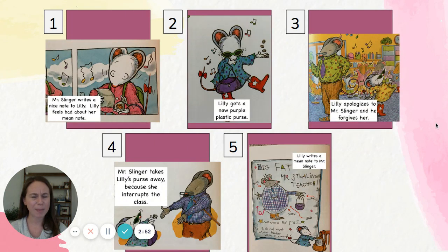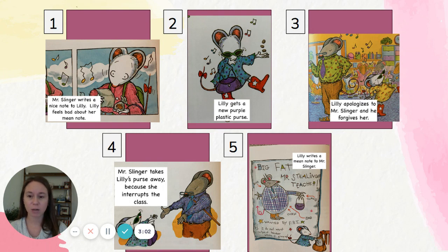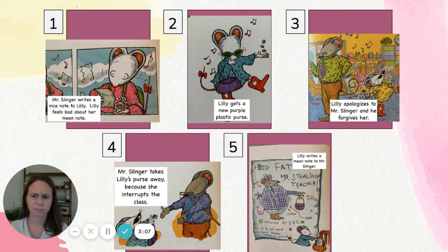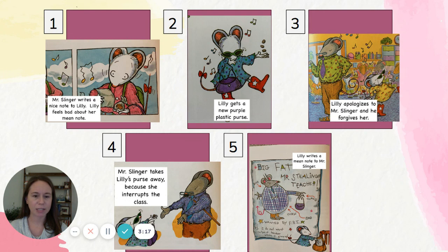But what happens if I change the way that I retell the story and put things out of order? Let's see if this makes sense. First, Mr. Slinger writes a nice note to Lily and Lily feels bad about her mean note. I'm already feeling a little confused. Next, Lily gets a new purple plastic purse. After that, Lily apologizes to Mr. Slinger and he forgives her. Well, that doesn't really make a lot of sense to me happening in the middle of the story. I'm not sure that really happened that way in the book.